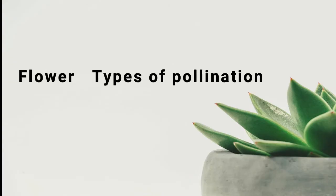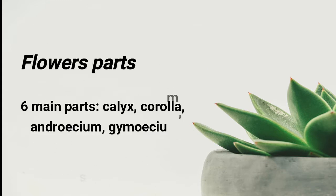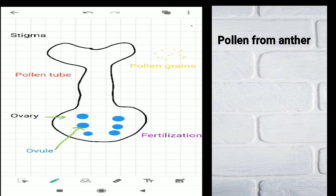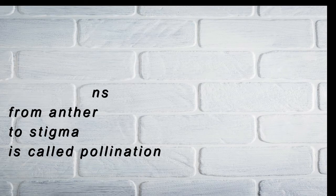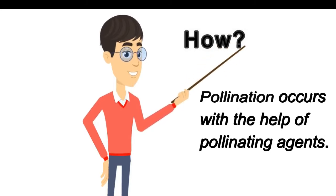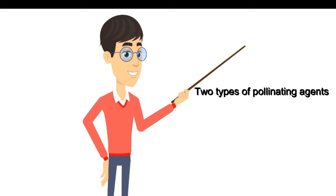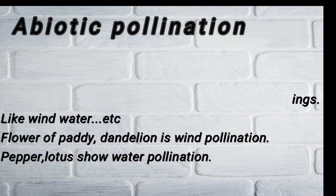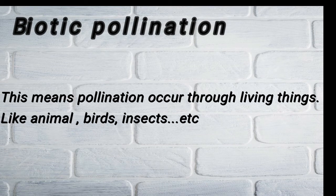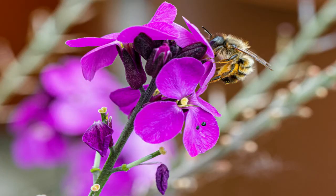Today's class is on types of pollination. The six major parts of a flower are calyx, corolla, androecium, gynoecium, thalamus, and pedicel. From previous classes, we know how pollen grains go from the anther to the stigma for pollination and fertilization. The transfer of pollen grains to the stigma is called pollination, and it occurs with the help of pollinating agents — biotic and abiotic. Abiotic means non-living things like wind and water; biotic means living things like animals and birds.